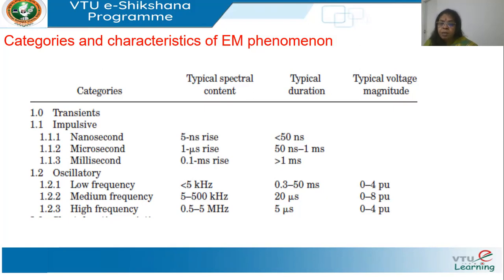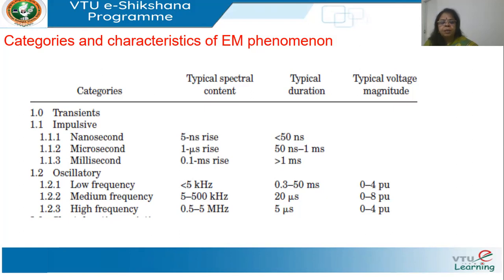Then we have oscillatory transients, which have both positive and negative polarity. We classify them by frequency of oscillation: low frequency, where the frequency of oscillation is less than 5 kHz, with a typical duration of 0.3 to 50 milliseconds — approximately two and a half cycles; medium frequency at 5 to 500 kHz, lasting only about 20 microseconds; and very high frequency in the megahertz range, lasting around 5 microseconds. These oscillatory voltages can typically reach up to 4 to 5 per unit.